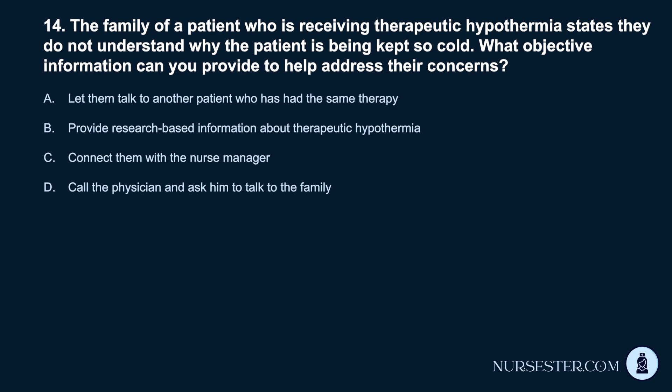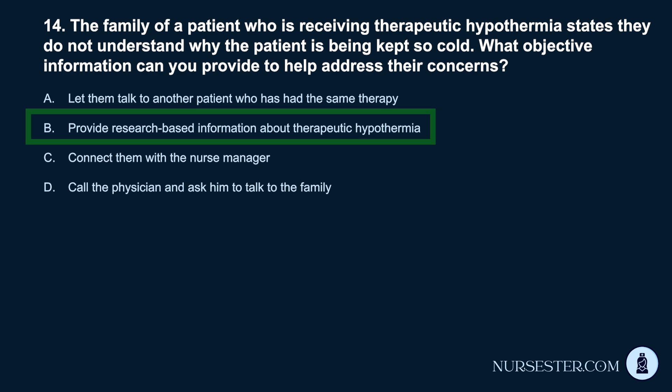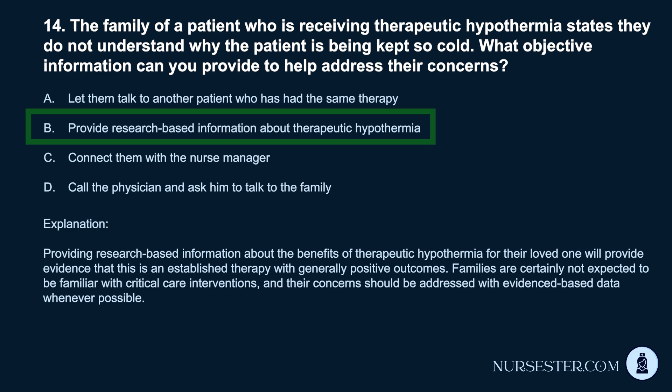Question 14. The family of a patient who is receiving therapeutic hypothermia states they do not understand why the patient is being kept so cold. What objective information can you provide to address their concerns? a. Let them talk to another patient who has had the same therapy. b. Provide research-based information about therapeutic hypothermia. c. Connect them with the nurse manager. d. Call the physician and ask him to talk to the family. Correct answer: b. Providing research-based information about the benefits of therapeutic hypothermia will offer evidence that this is an established therapy with generally positive outcomes. Families' concerns should be addressed with evidence-based data whenever possible.